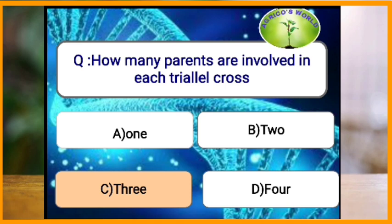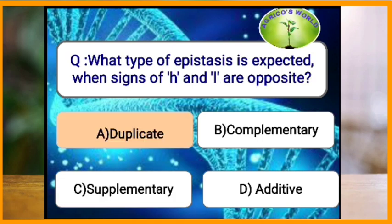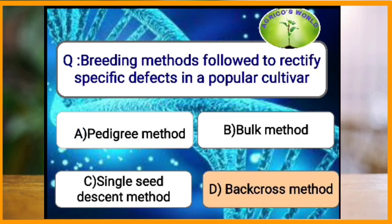How many parents are involved in each triallele cross? Three parents are involved in each triallele cross. What type of epistasis is expected when the signs of h and l are opposite? When h and l carry opposite signs, duplicate epistasis is expected.